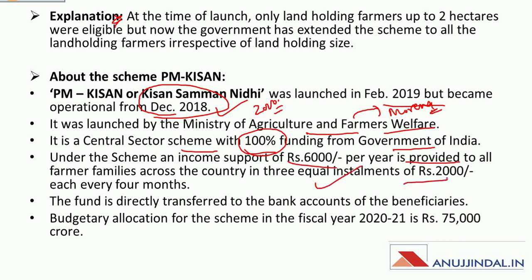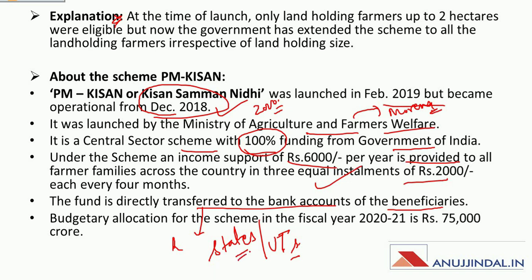Under PM Kisan, rupees 6000 per year is provided to all farmers in three equal installments of rupees 2000. The funds are directly transferred to the bank accounts of beneficiaries. The responsibility of identification of beneficiaries lies with the state or union territory governments. In fiscal year 2021, the budgetary allocation for this scheme was rupees 75,000 crore.